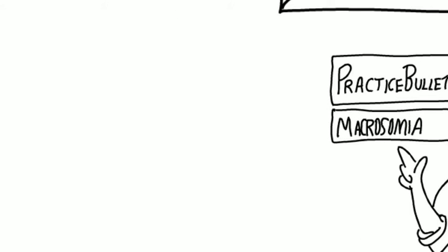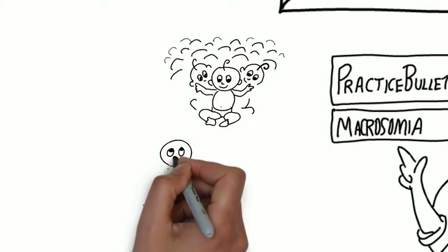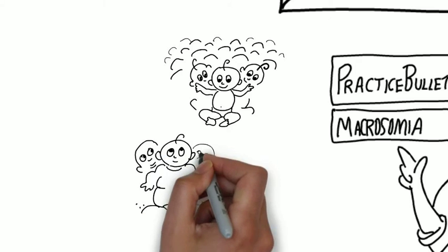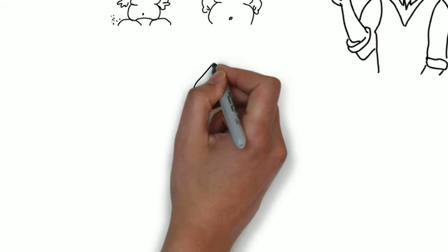What's the scope of this problem? What's the frequency of macrosomia? Well, 8% of all live-borns weigh in excess of 4,000 grams. Only 1% of live-borns weigh more than 4,500 grams.